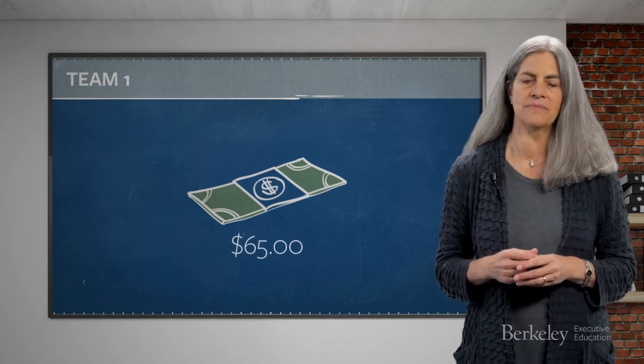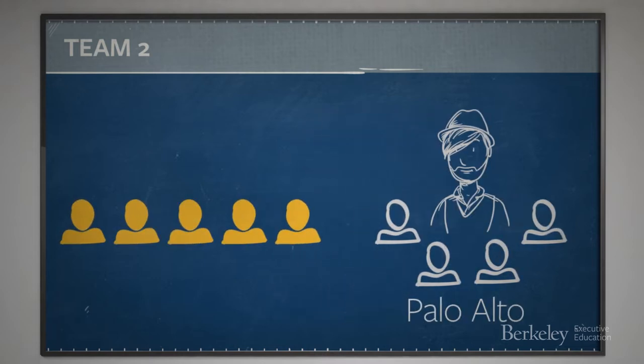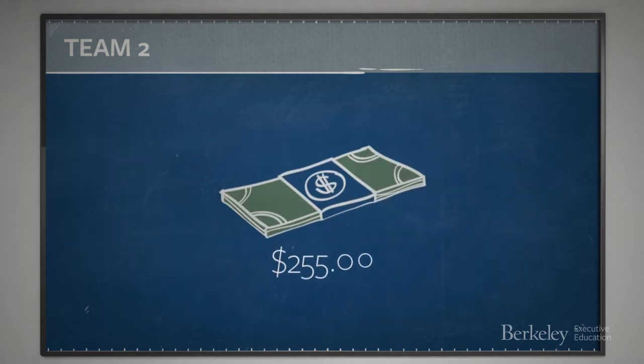A second team went to downtown Palo Alto where there are many nice restaurants and patrons sometimes wait in line for a table. The team offered to wait in line so that those patrons could go to a bar for a drink or go shopping instead of waiting. They returned to class with two hundred and fifty-five dollars. What was different about their solution? They didn't use the five dollars. By taking the five dollars out of their frame while brainstorming ideas, they were able to focus on higher value-creating work that leveraged their time.